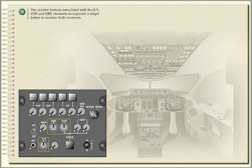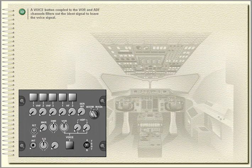The receive buttons associated with the ILS, VOR, and DME channels incorporate a single button to monitor both receivers. A voice button coupled to the VOR and ADF channels filters out the ident signal to leave the voice signal.